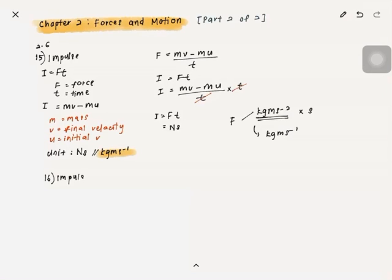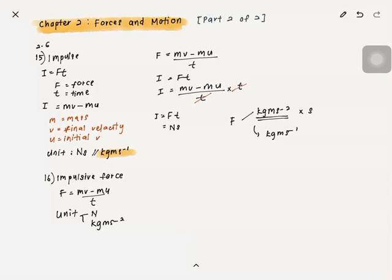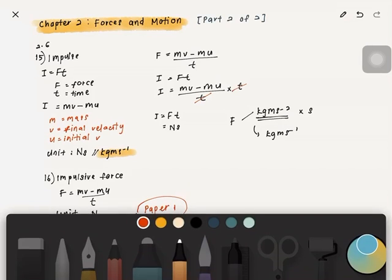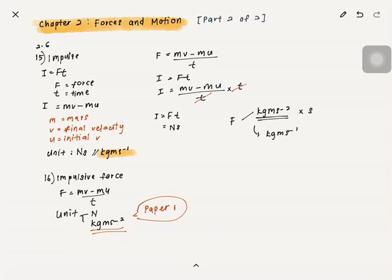Number 16 is a recap of impulsive force: impulsive force = (mv − mu)/t. The unit is either newton or kg·m·s⁻². This is important to remember for Paper 1, as they may test whether you know the alternative unit for force.